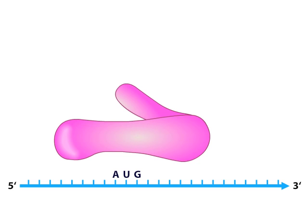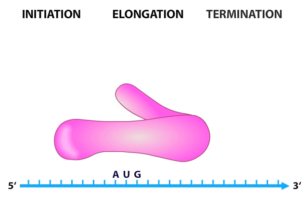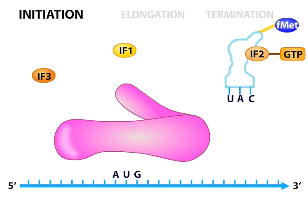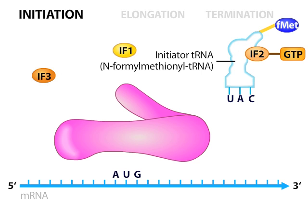Protein synthesis is a three-step process, including initiation, elongation, and termination. In bacteria such as E. coli, initiation requires three small proteins called initiation factors — IF1, IF2, and IF3 — as well as the first tRNA, the mRNA, and the small ribosomal subunit, also called the 30S subunit.